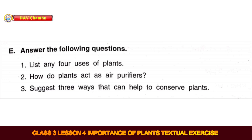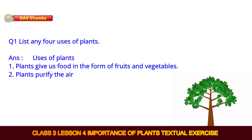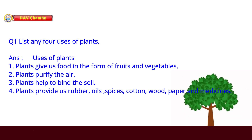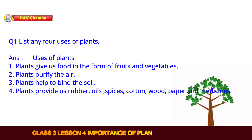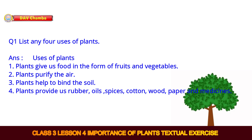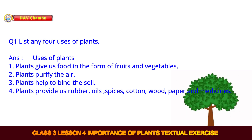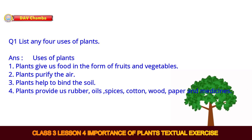And the last part is Part E — Answer these questions. Question 1: List any four uses of plants. The answer is: Plants give us food in the form of fruits and vegetables. Plants purify the air. Plants help to bind the soil. And plants provide us rubber, oils, spices, cotton, wood, paper and medicines.